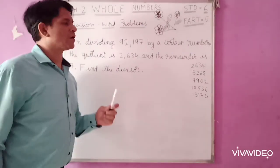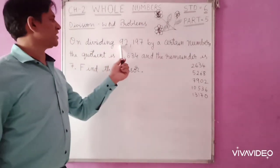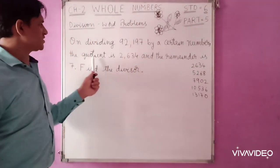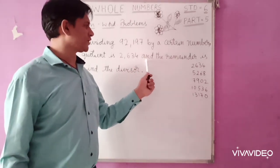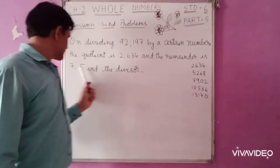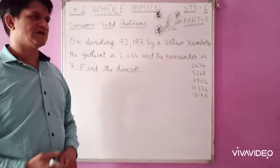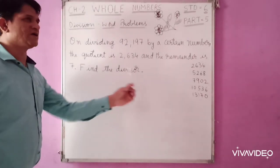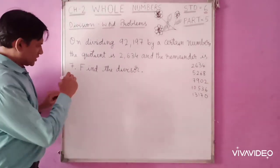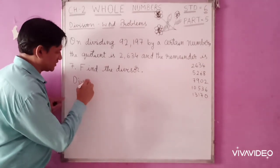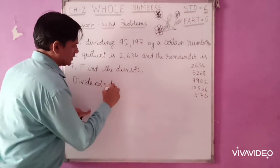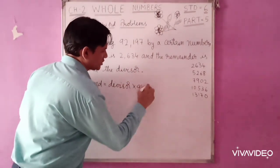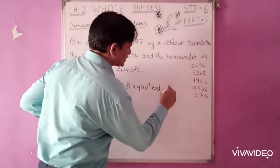Now we have another problem. On dividing 92,197 by a certain number, the quotient is 2634 and the remainder is 7. Find the divisor. First, you have to use the division algorithm here, because you don't know the divisor.